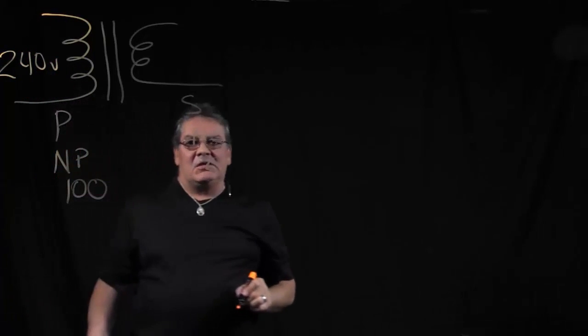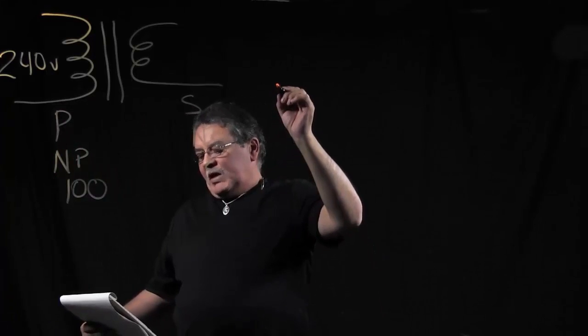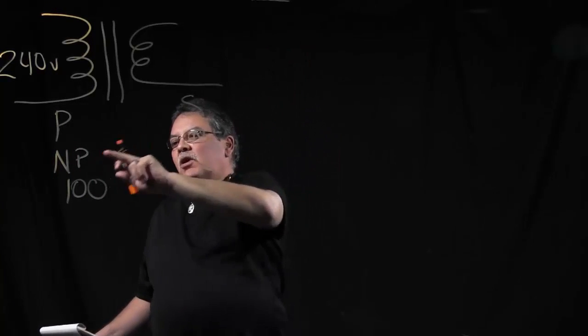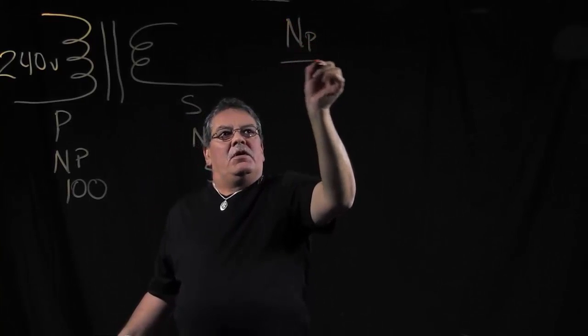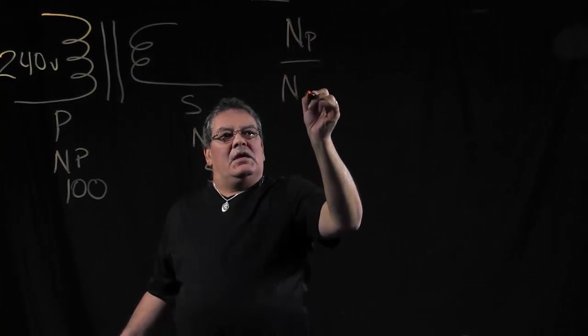OK, now here comes some of the math. So for turns ratio, basically, we already know what our primary is. So our primary is NP over NS.